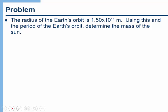So let's do the following problem. The radius of the Earth's orbit is 1.50×10¹¹ meters. Using this and the period of the Earth's orbit determine the mass of the Sun.